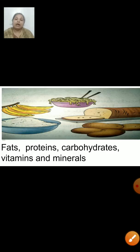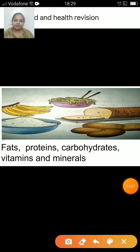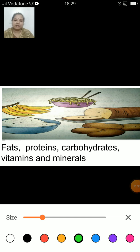Now have a look at the picture and tell whether the given picture is a source of fats, proteins, carbohydrates, or vitamins and minerals. The following picture shows which nutrient? The correct answer is carbohydrates. Bread, potato, noodles, banana, rice — all these are good sources of carbohydrates.